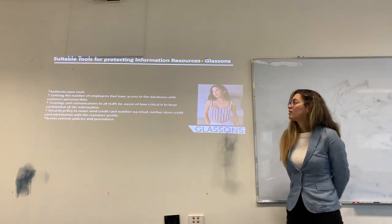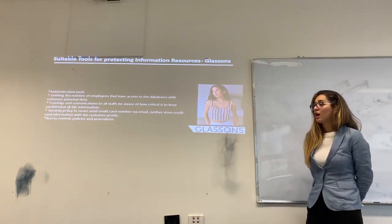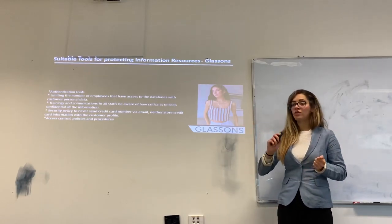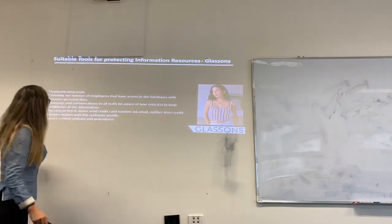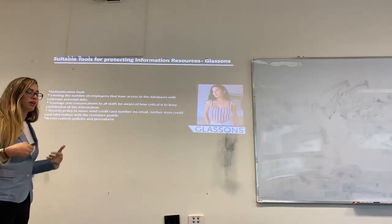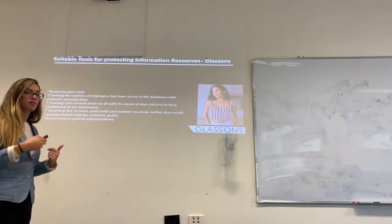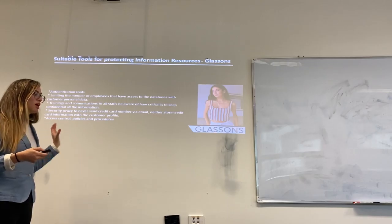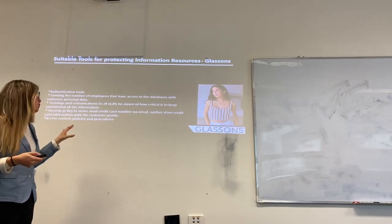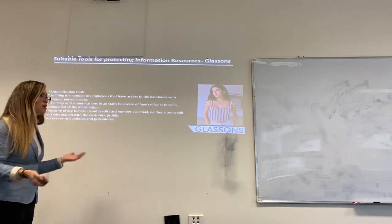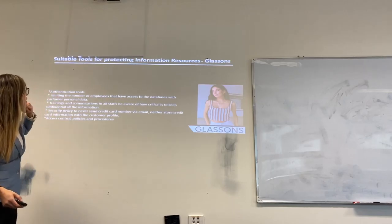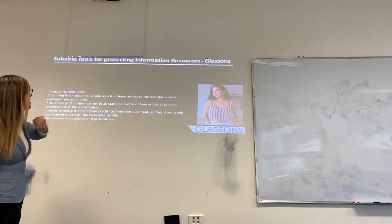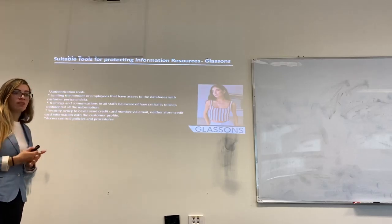Next: suitable tools for protecting information resources. There are different tools and actions that Glassons can take to protect their information resources. Some of them are authentication tools. For example, if an employee wants to get into the system they will have their own password. They need to be aware of using a difficult password, not an easy one like 1234 or a birthday, so that not just anyone can access it. They also limit the number of employees that have access to the database with customer personal data.